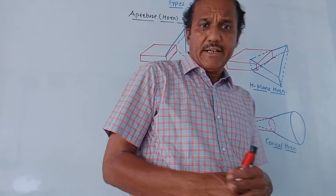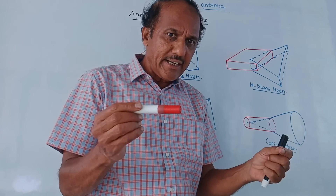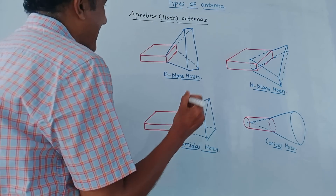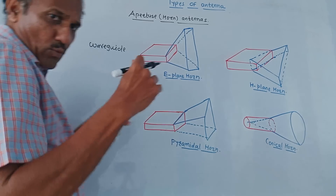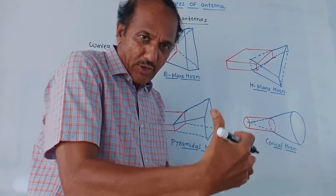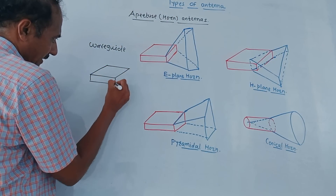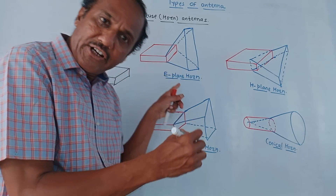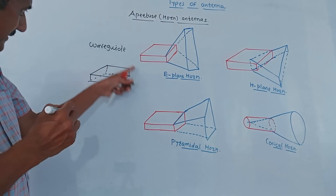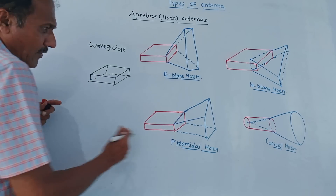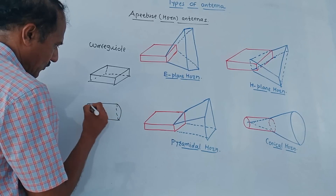Next is an important type: aperture antennas, also called horn antennas. These are related to the structure called a waveguide, which guides signals and waves propagating through it. There are two types of waveguides: one is a rectangular waveguide and the other is a circular waveguide, which is shaped like a cylinder.